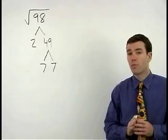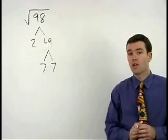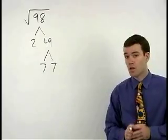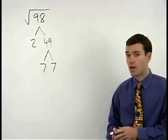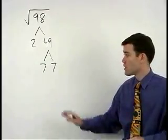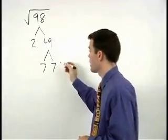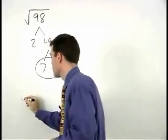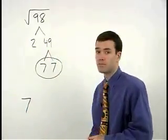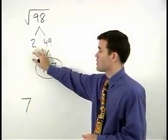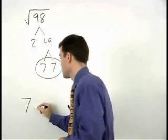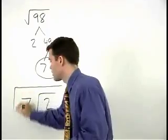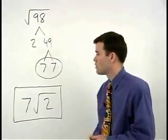If a factor pairs up then it will come out of the radical. If a factor does not pair up then it stays inside the radical. So here since our 7's pair up, a 7 will come out of the radical. Since the 2 does not pair up, it stays inside the radical. And our answer is 7 root 2.